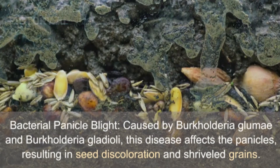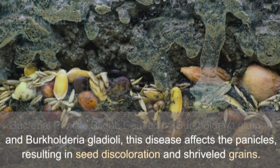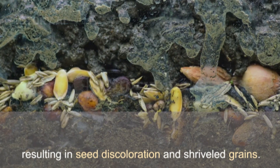Bacterial panicle blight, caused by Burkholderia glumae and Burkholderia gladioli. This disease affects the panicles, resulting in seed discoloration and shriveled grains.